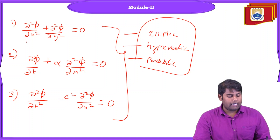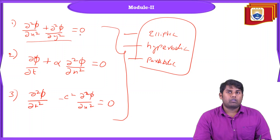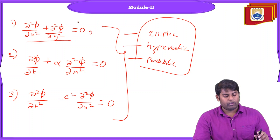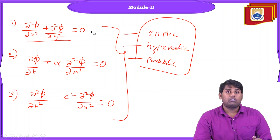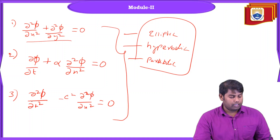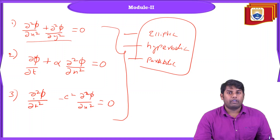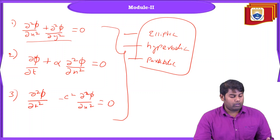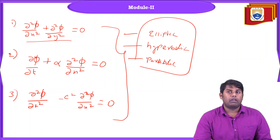The first equation is the Laplace equation. When the source term on the right-hand side is equal to zero, it is called a homogeneous equation. When you have any other term — some g or any other source term on the right-hand side — then it is called a non-homogeneous equation. The second is the diffusion equation and the third is the wave equation. We will calculate and classify them into elliptic, hyperbolic, or parabolic.